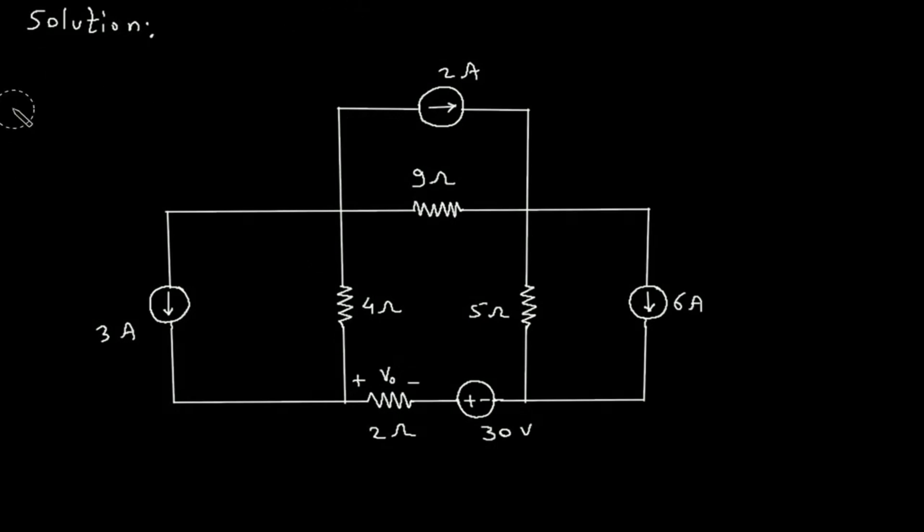So this will be the voltage source here. This will be positive and this will be negative. Because the direction of current is in this direction, the polarity will be like this. Voltage equals current times resistance, so this will be 3 times 4, which is 12 V.